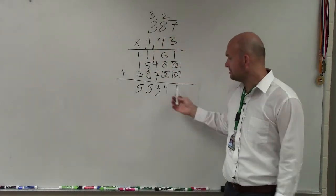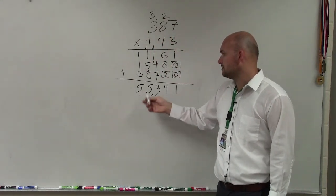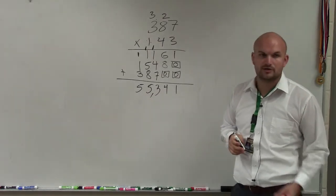Then to write in my comma, you start all the way to the right and go by threes. So it's 55,341.